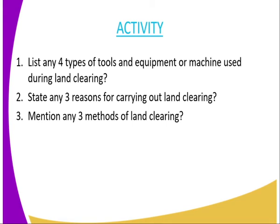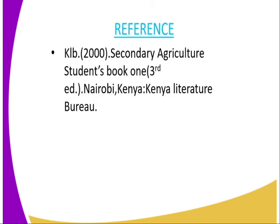We have come to the end of today's lesson, and the questions I'm going to assign you, in the form of an assignment: the first question is, list any four types of tools and equipment or machines used during land clearing. The second question: state any three reasons for carrying out land clearing. Number three: mention any three methods of land clearing. For reference, you can refer to the Secondary Agriculture Student Book 1, and the publisher is the Kenya Literature Bureau.